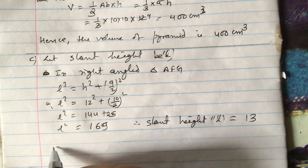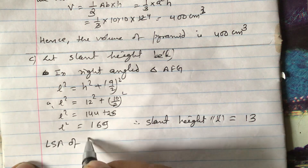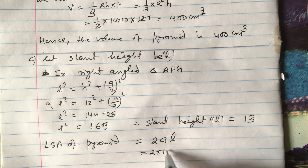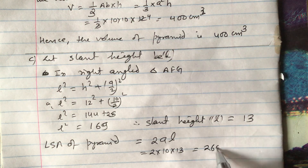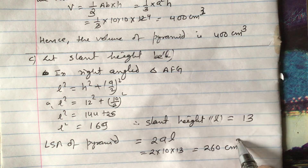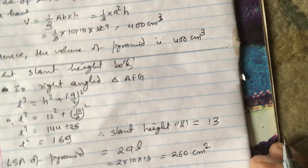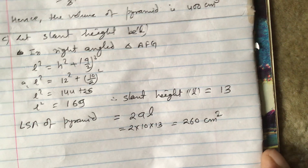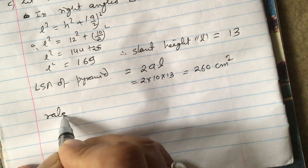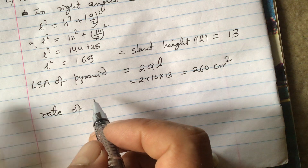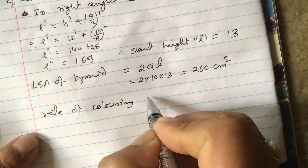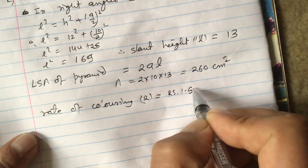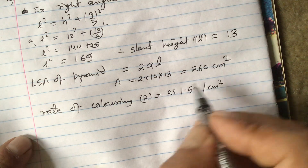Now we find the lateral surface area. The lateral surface area (LSA) of a pyramid is given by 2al. So LSA = 2 times 10 times 13 = 260 cm². This is the area of the triangular faces. The rate of coloring r is given as 1.50 rupees per cm².